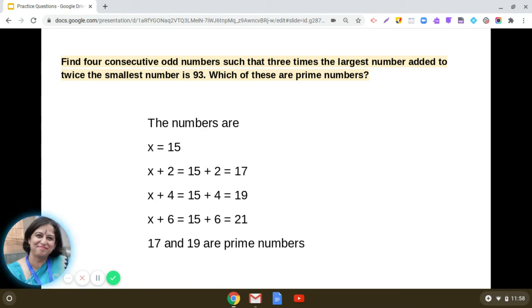Out of these four odd numbers, that is 15, 17, 19, and 21, we can easily see that 17 and 19 are the prime numbers. So this is how we have solved this question. I hope you have understood this.